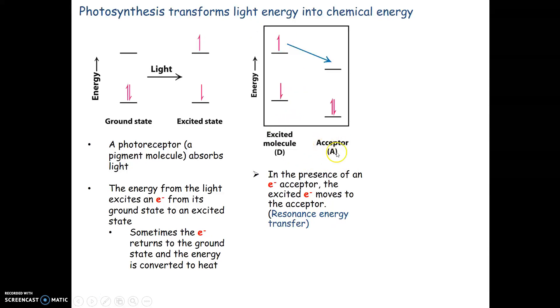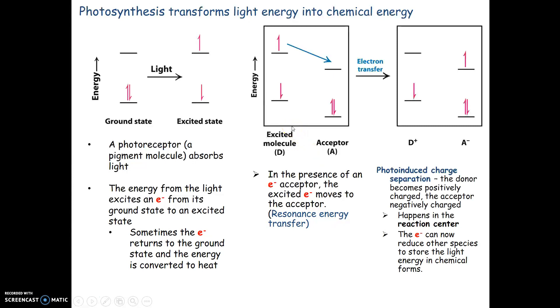We also have acceptor molecules. This excited electron could go back to ground state, releasing energy as heat. But it could get accepted by the acceptor molecule. The donor molecule loses an electron and becomes positive. The acceptor gains an electron and becomes negative. This is resonance energy transfer, happening at the reaction center of photosystem I.